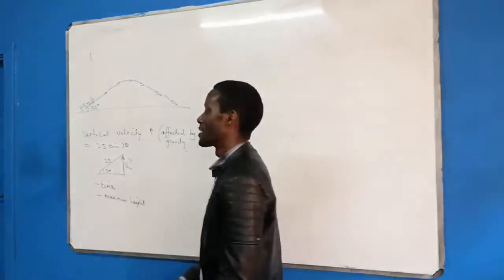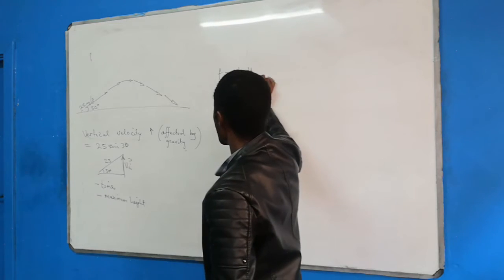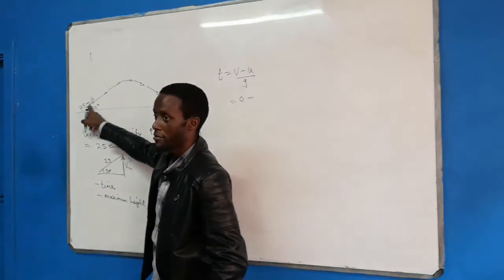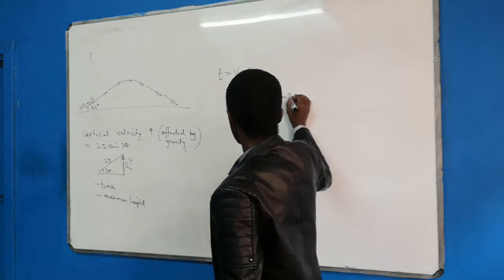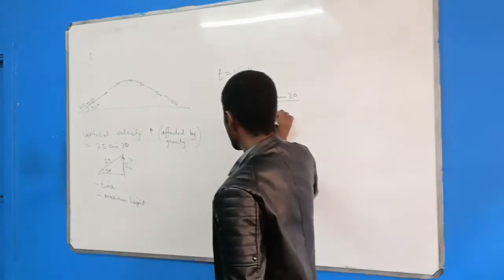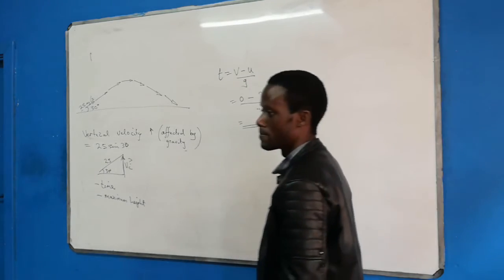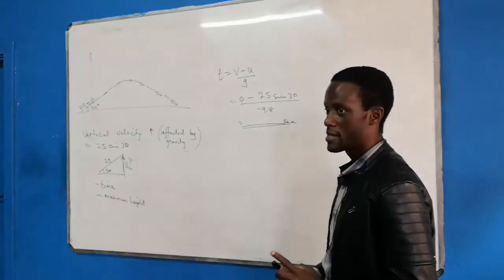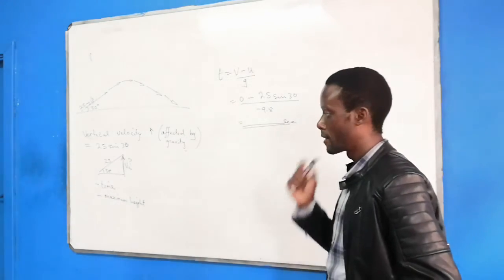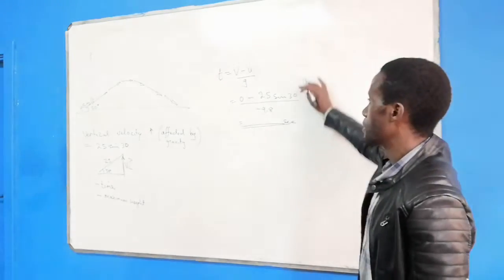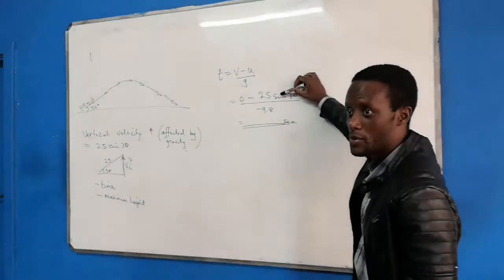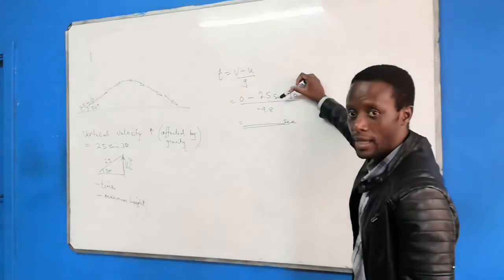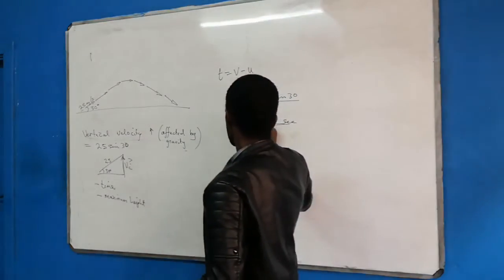To get the time, we use the same formula: t equals (v minus u) over g. The final velocity is zero, and we now use 25 sine 30 as our initial velocity, divided by negative 9.8. Make sure your calculator is in degrees mode when using trig ratios like sine, cosine, and tangent, or you will get different answers. This gives t equals 1.275 seconds.